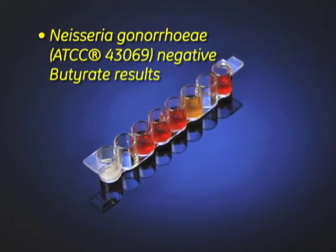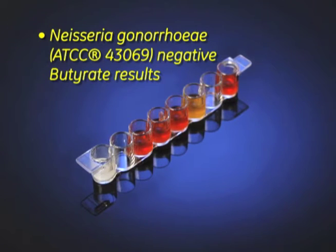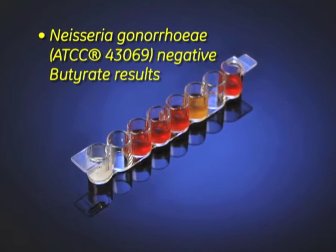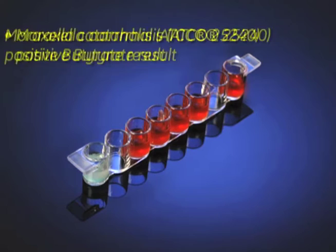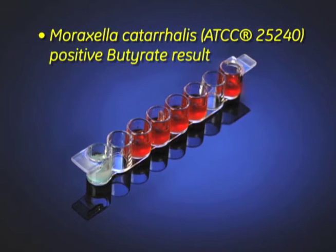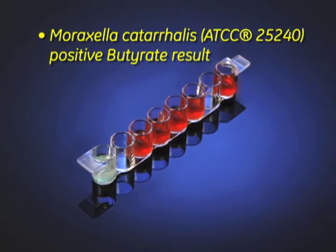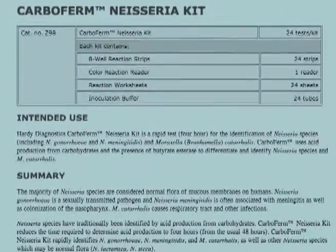Neisseria species will be negative for butyrate and show various patterns of fermentation of the carbohydrates. Moraxella catarrhalis will be positive for butyrate and negative for all the carbohydrates. Be sure to read the technical insert for more information.